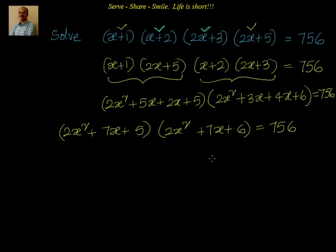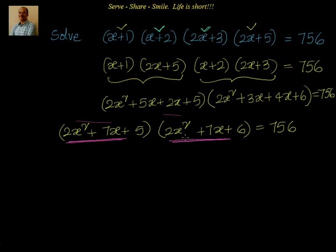So this is nothing but 2x square plus 7x plus 5, multiplied with 2x square plus 7x plus 6. You can see that 2x square plus 7x is the same in both expressions. You have to pick the groups in such a way that Ax square plus Bx will be the same in both quadratic expressions.